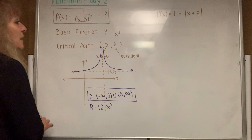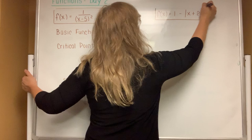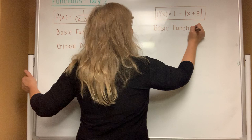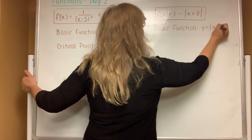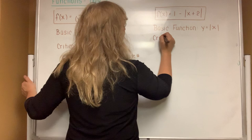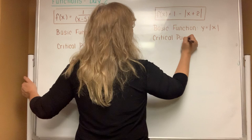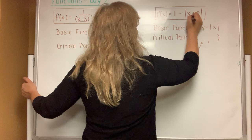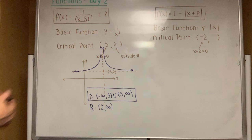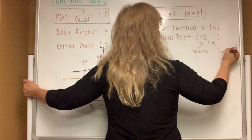The second example has a different function with absolute value bars. The basic function you're drawing most likely resembles y equals the absolute value of x. The absolute value of x, when graphed, looks like the letter V. Going for the critical point: to find the x-coordinate, take the x part, set it equal to 0, and solve. Subtracting 2 from both sides gives x equals negative 2. For the y-coordinate, go for the outside number.